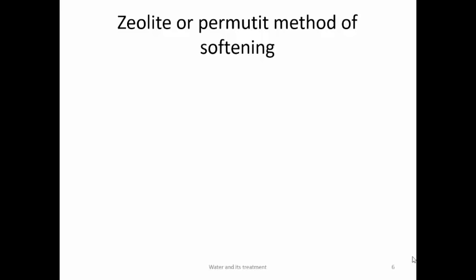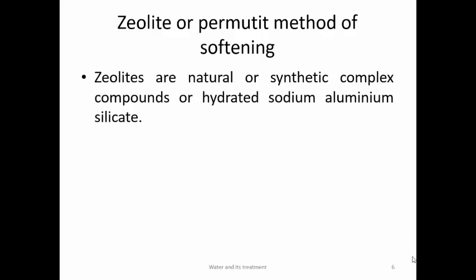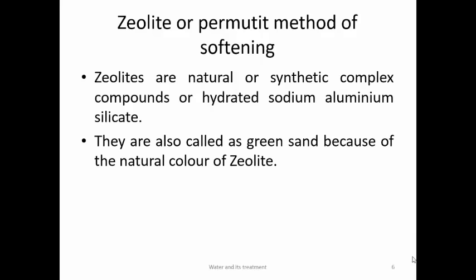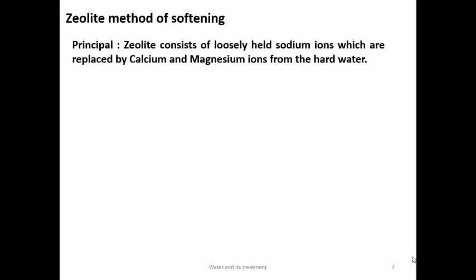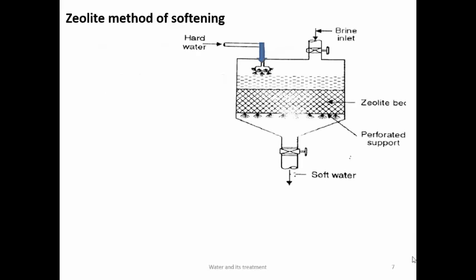Next is the zeolite or permutit method of softening. Zeolites are natural or synthetic complex compounds — also called hydrated sodium aluminium silicate — and are also called green sand due to their natural color. The principle is that zeolite consists of loosely held Na⁺ ions which are replaced by Ca²⁺ and Mg²⁺ ions present in hard water. The formula of zeolite is Na₂O·Al₂O₃·xSiO₂·yH₂O, abbreviated as Na₂Z. Since calcium is a stronger ion than sodium, calcium replaces sodium, and Ca²⁺/Mg²⁺ are absorbed on the zeolite, while the water is freed from them.